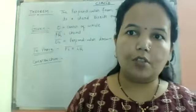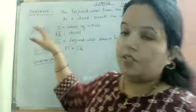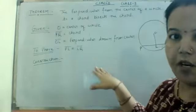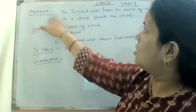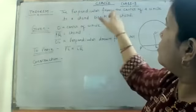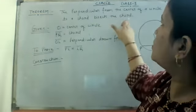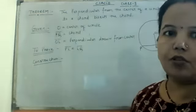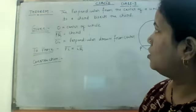We are going to learn one theorem. You can see the theorem is already written on my board. The theorem is: the perpendicular from the center of a circle to a chord bisects the chord. That is the theorem we have to prove.